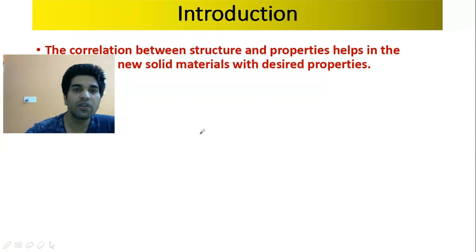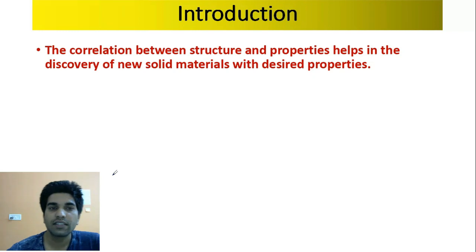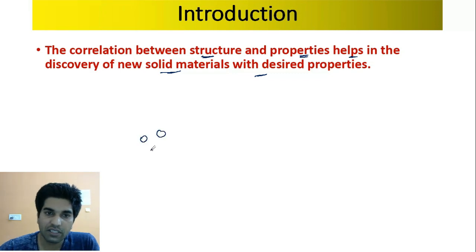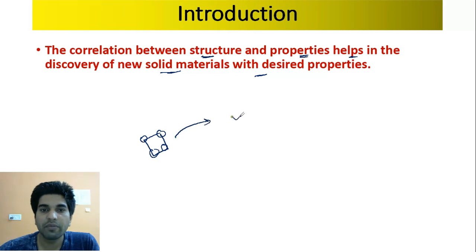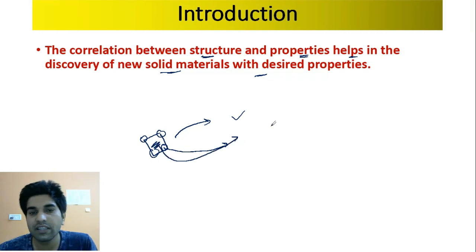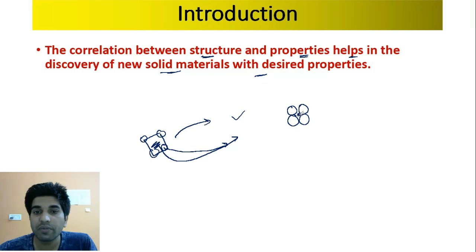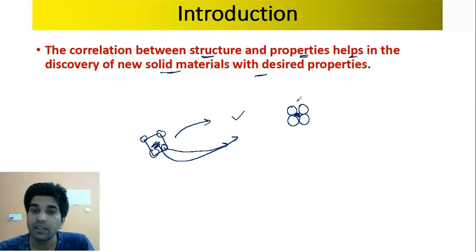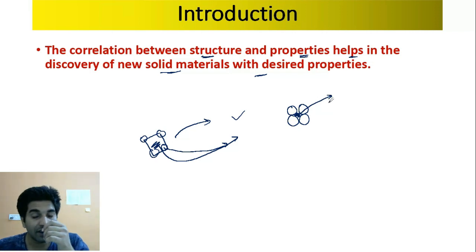In this introduction, we are going to study the correlation between structure and properties. The correlation between structure and properties helps in the discovery of new solid materials with desired properties. For example, steel is made more tough than iron by trapping small carbon and boron particles into the iron structure. So we can use structure-property correlation to design new solids.